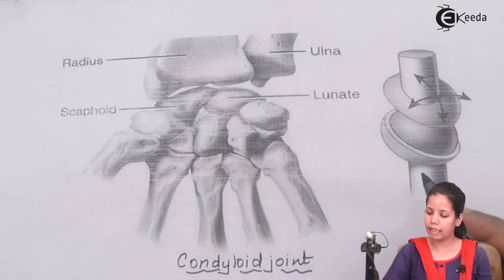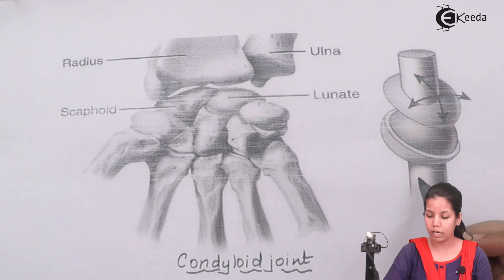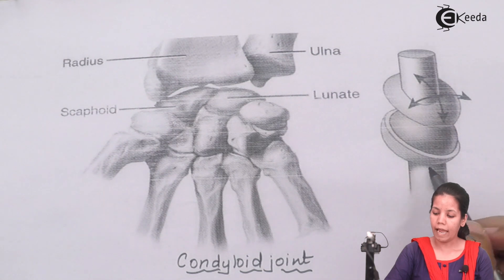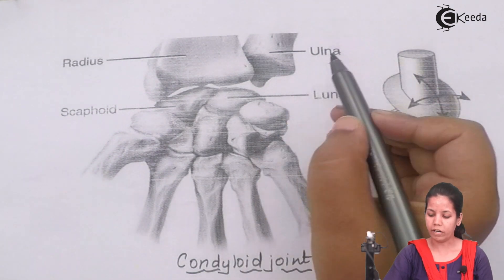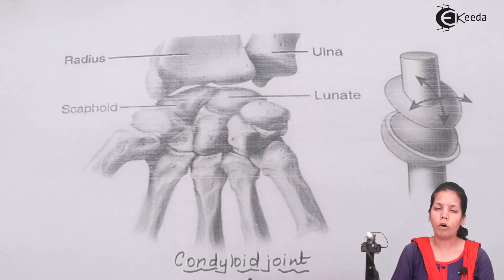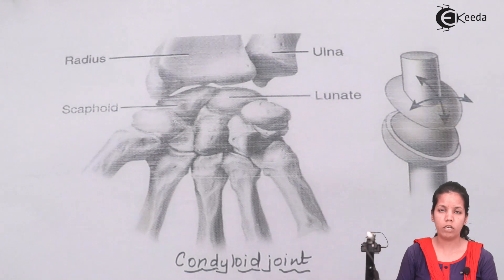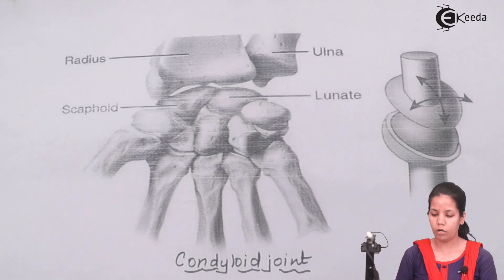This diagram purely depicts how condyloid joints work and how side-by-side movement occurs. The ulna and radius purely depict the presence of condyloid joints in your hands. Whenever you do movements of side-by-side picking or moving in a particular direction — but not rotation — that's when your condyloid joints come into action.